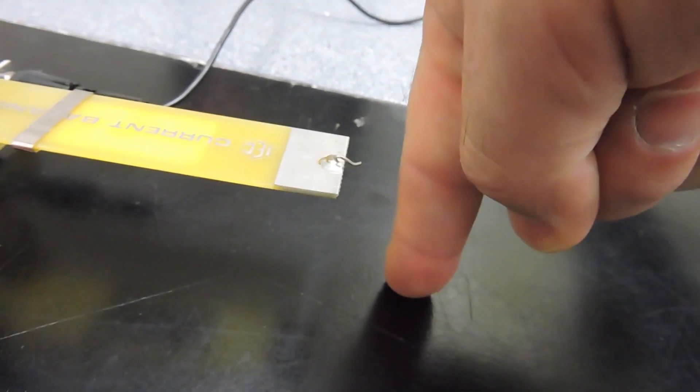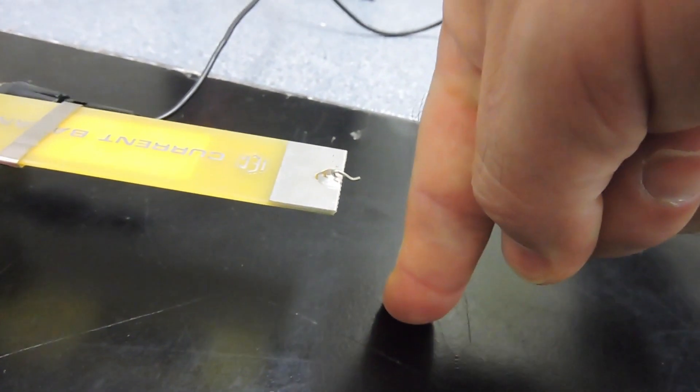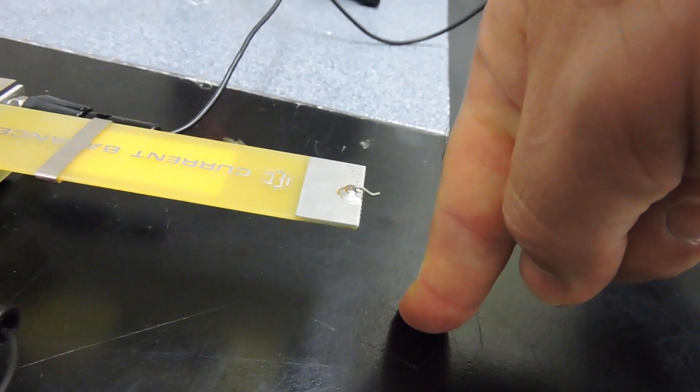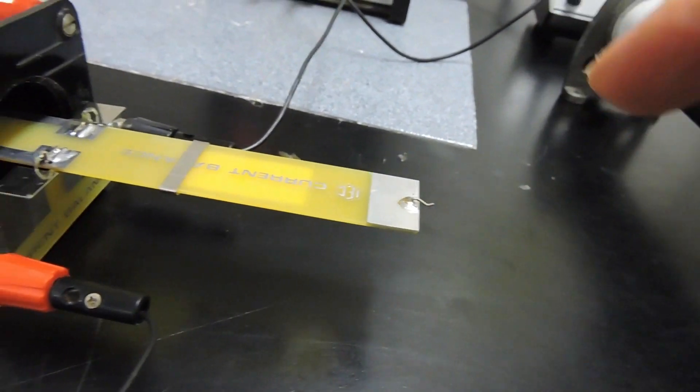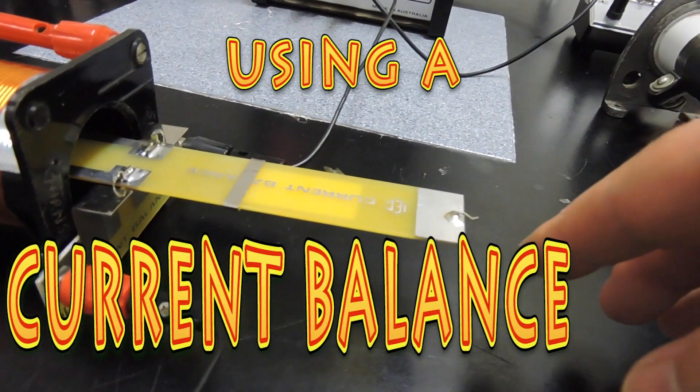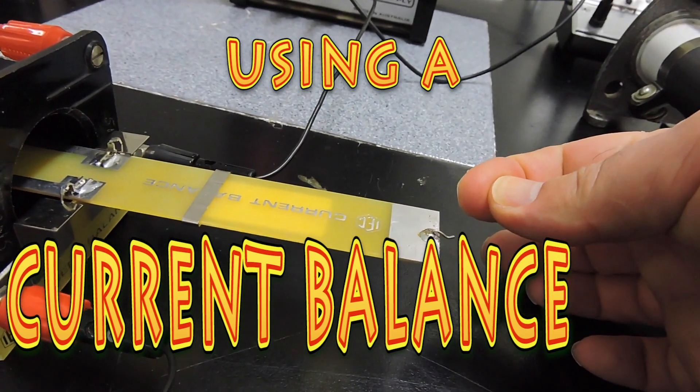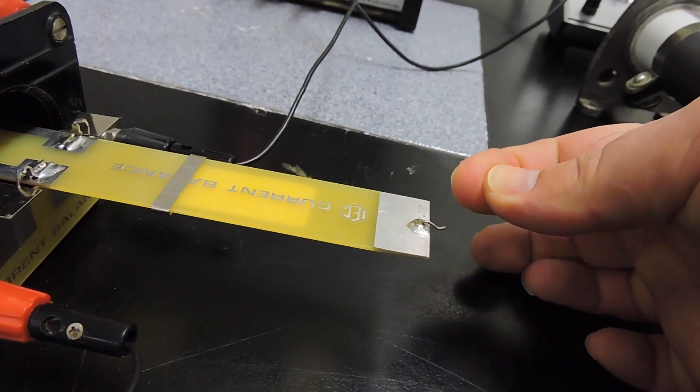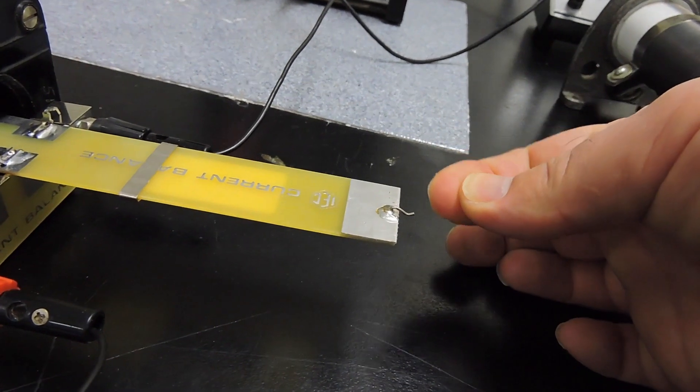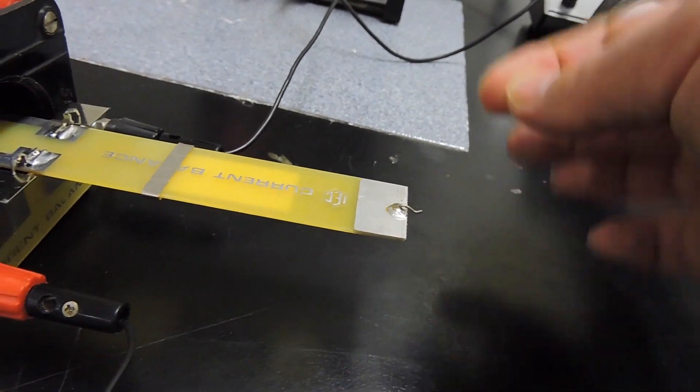You put a ruler over here and you can measure the amount of deflection that you need. More specifically, when we're going to turn this on, this is going to deflect. We want to use a staple to counterbalance that so that we go back to the original setting.